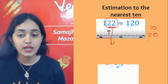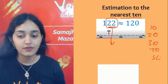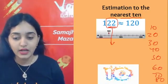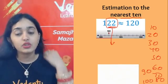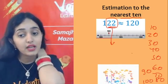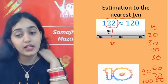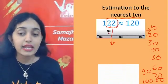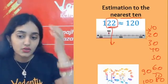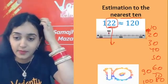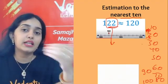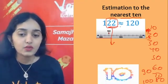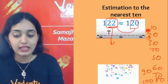The multiples of 10 are 10, 20, 30, 40, 50, 60, 70, 80, 90, 100. You have to check between which two tens the number lies. 22 lies between 20 and 30 — 22 is obviously nearer to 20, so 22 will be rounded off to 20.